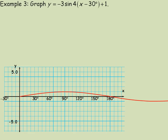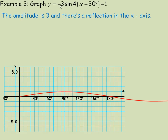In the third example, we graph y equals negative 3 sine(4x minus 30 degrees) plus 1. The negative 3 multiplied by the sine: the 3 is the amplitude, and the negative means there's been a reflection in the x-axis, so compared to the original sine graph, this graph is going to be upside down. The period of this function has been shortened considerably.